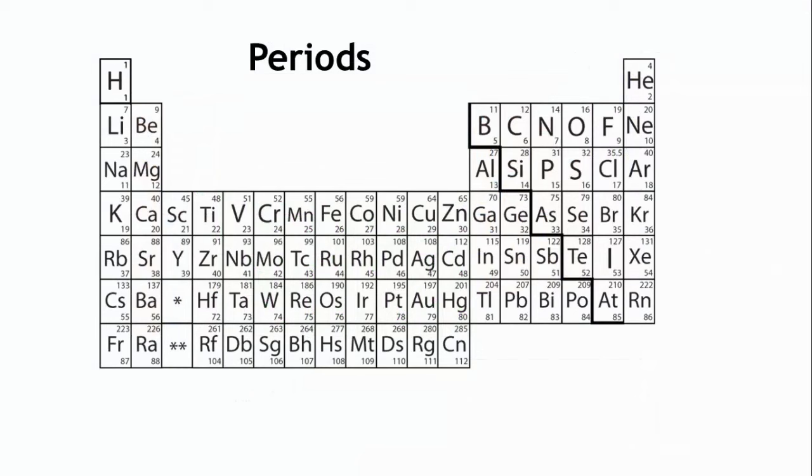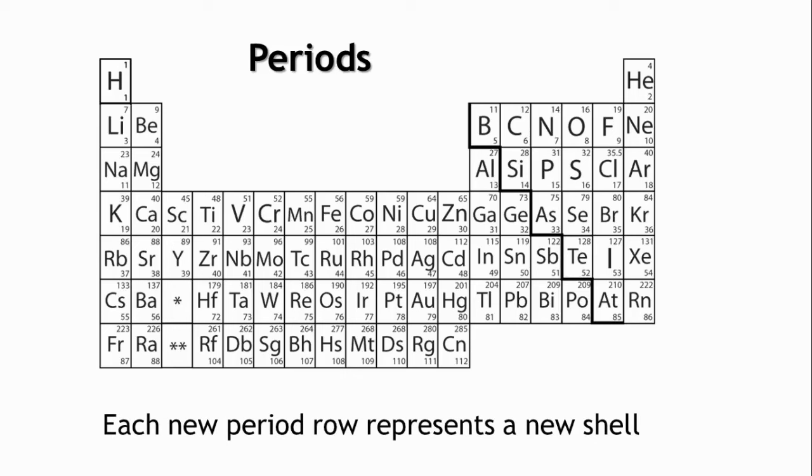The rows going across, from left to right, are periods. Elements in the same period all share something in common. They have the same number of energy shells. Each new period row represents a new shell.